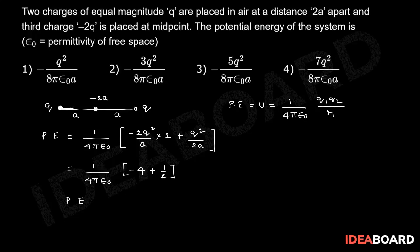Therefore, the potential energy is equal to minus 7Q squared by 8 pi epsilon_0 A.